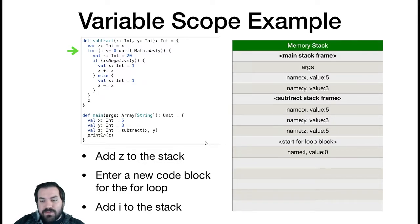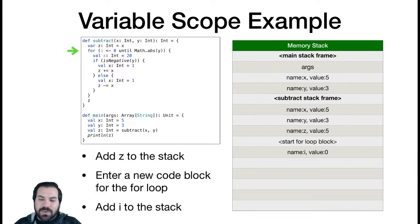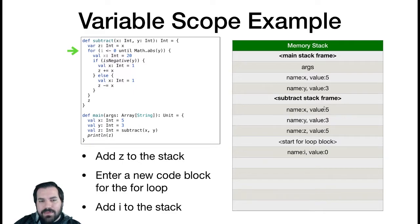We got the value because we passed it as an argument. We took the x in the main frame, resolved it to 5 inside that frame, and the method call's argument resolution happens inside the main stack frame. When the subtract stack frame is created, we create this x and y assigning them the resolved values — 5 and 3 respectively. So x resolved to 5 because there is a variable named x inside the subtract stack frame with value 5.